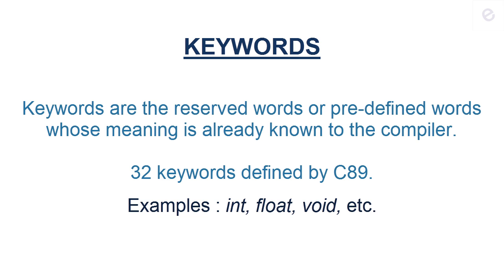What are keywords? Let us talk about keywords. Basically, keywords are the reserved words or predefined words whose meaning is already known to the compiler. Each keyword performs a particular task and we cannot use keywords to name something or as identifiers. They have different properties. 32 keywords have been defined by C89. Few examples are int, float, void, goto, etc. We would be coming across many keywords as we proceed with programming and further tutorials.